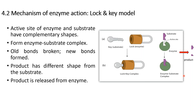When the enzyme-substrate complex is formed, the substrate reaches the transition state — the least stable state — where the old bonds are broken and new bonds are formed, producing the products. The products have a different shape from the substrate. They are then released from the active site of the enzyme, and the enzyme can participate in the next chemical reaction.